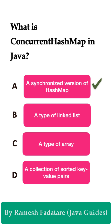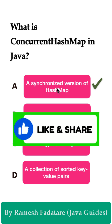The correct answer is Option A: a synchronized version of HashMap. ConcurrentHashMap is a thread-safe variant of HashMap in Java, specifically designed for concurrent access by multiple threads. ConcurrentHashMap allows multiple threads to read and modify the map simultaneously without corrupting the data. Option A is correct because ConcurrentHashMap is a synchronized version of HashMap, optimized for use in a concurrent environment.